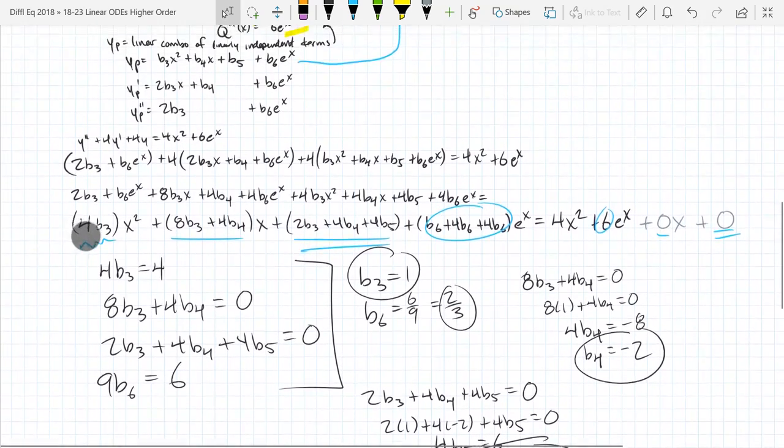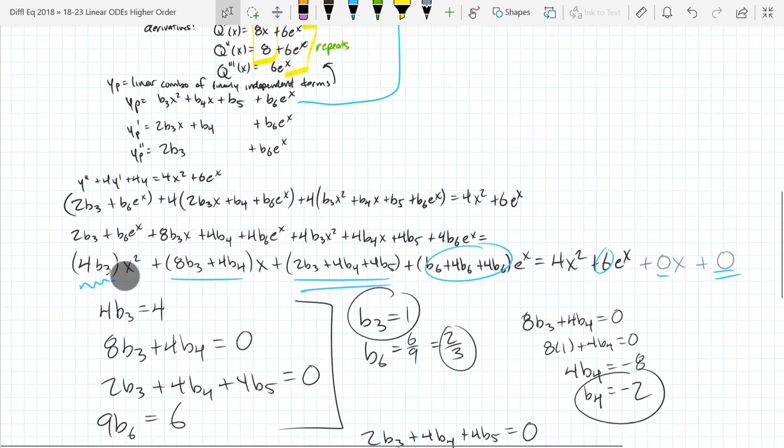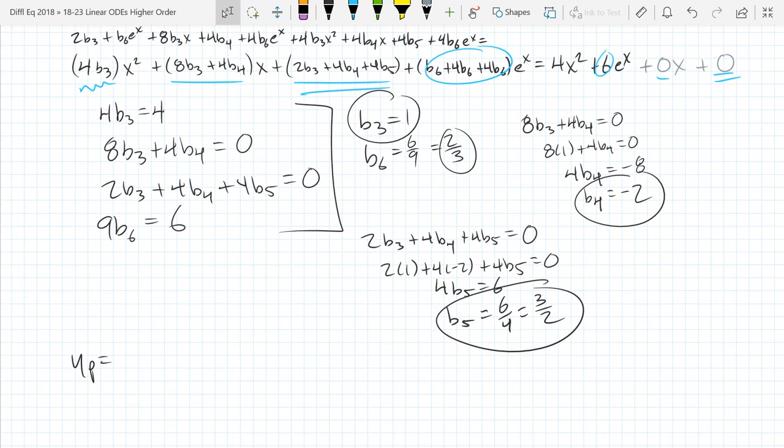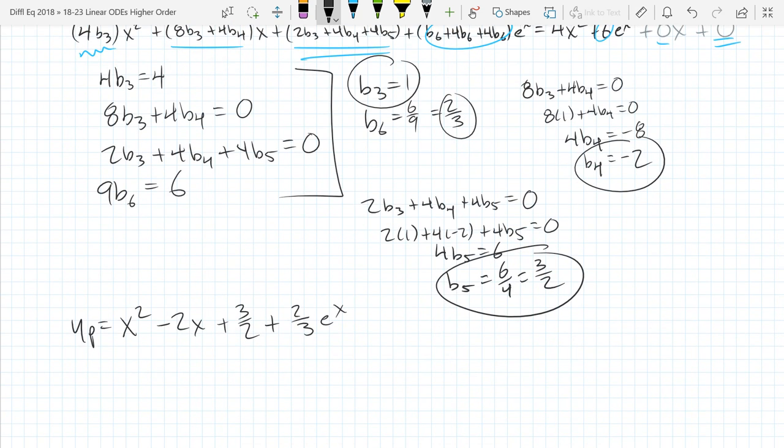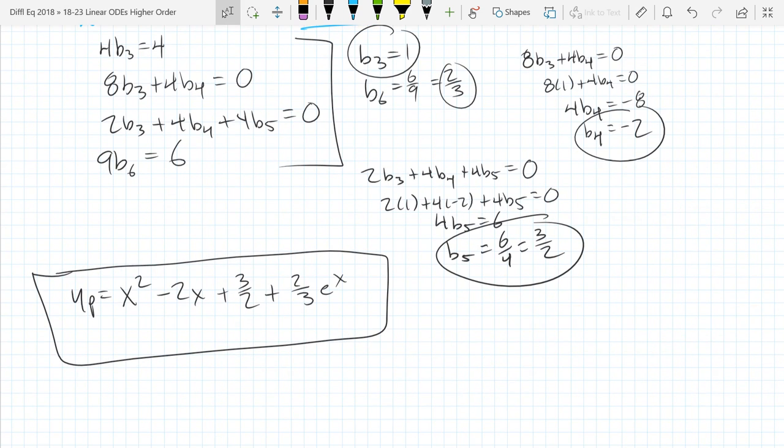There's so much on the screen. Oh my goodness. So we got B3X squared, so that's 1X squared, B4, so that's minus 2X, constant is B5, 3 halves, B6 is 2 thirds, is my E to the X coefficient. So this is YP, right here. Any questions on what we did lining this up?